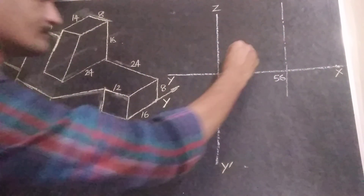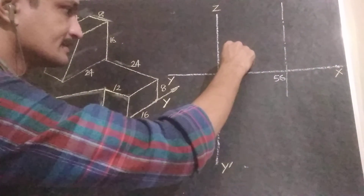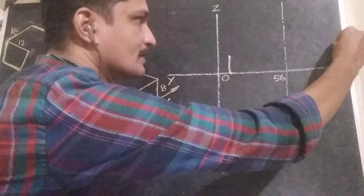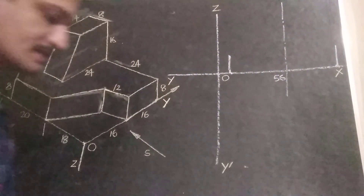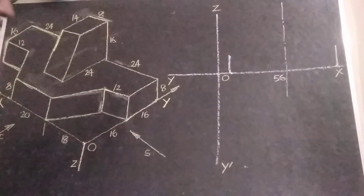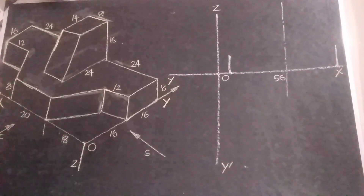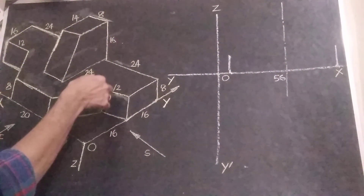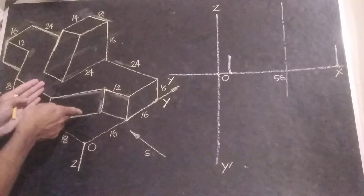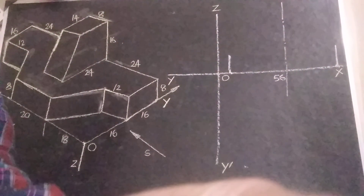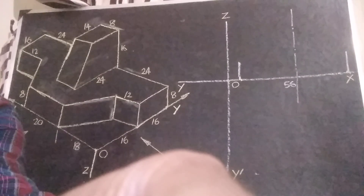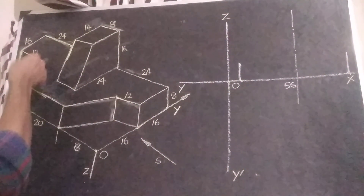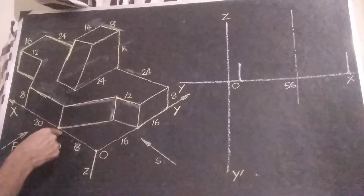This height is equal to 8 units; we can draw that height of 8 units on both sides. In front view, we can see this particular edge — this particular edge is visible in front view.